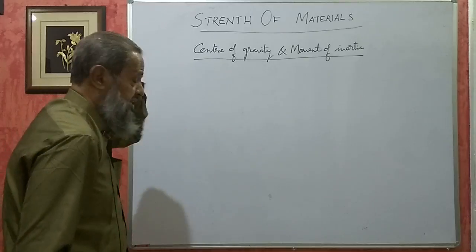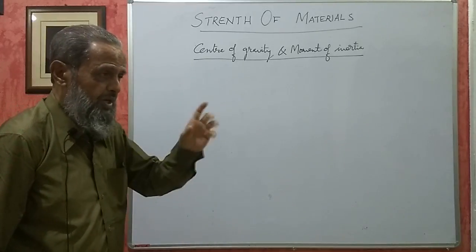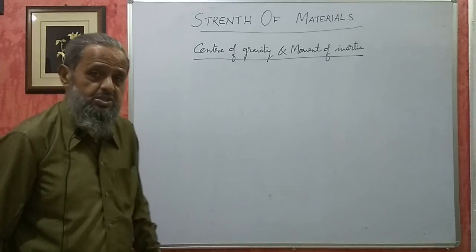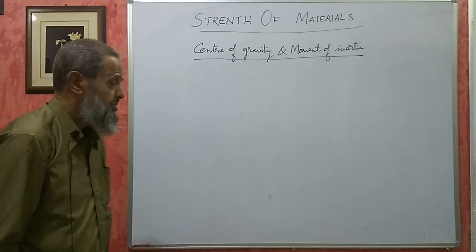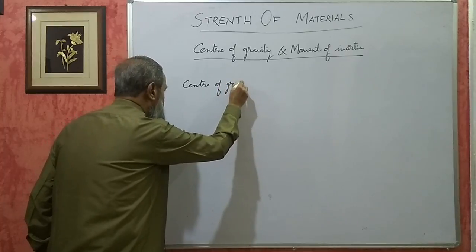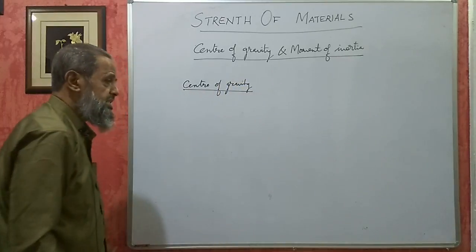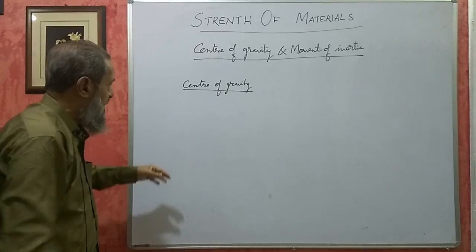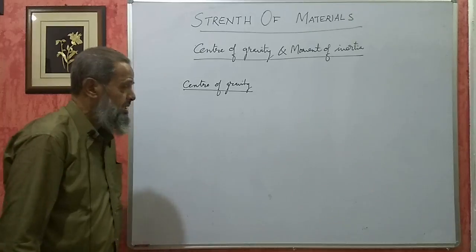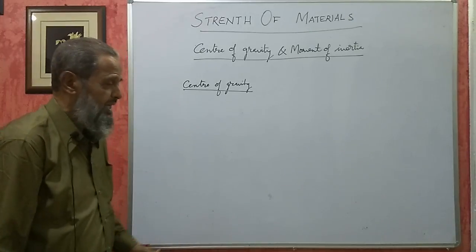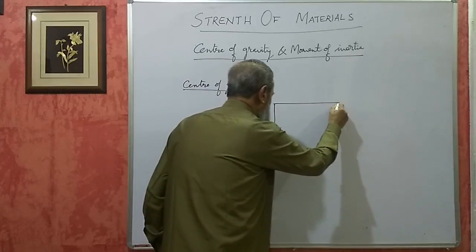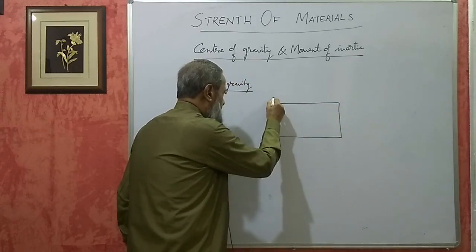Center of gravity is defined as a point through which the mass of that lamina or solid acts — that is known as the center of gravity. When we are asked to find the center of gravity, we have to locate that point through which its mass is acting. To locate a point, in analytical geometry, we require two reference lines which are called the axes.